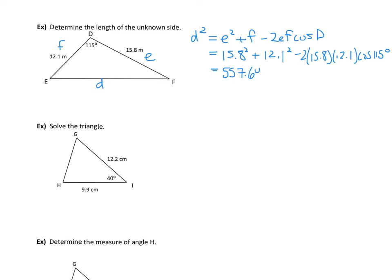Keeping all the digits in the calculator and hitting the square root button gives D equals 23.6 meters.